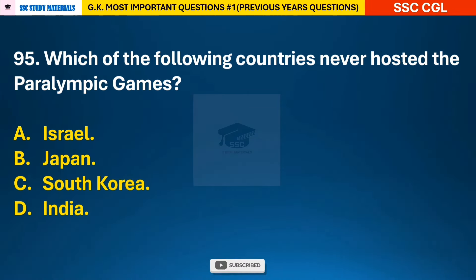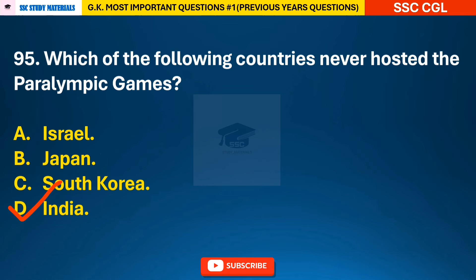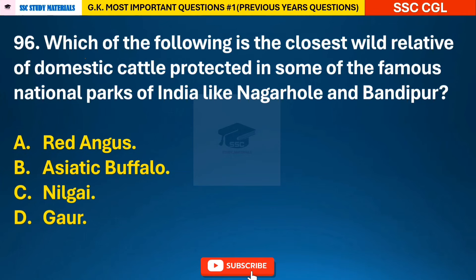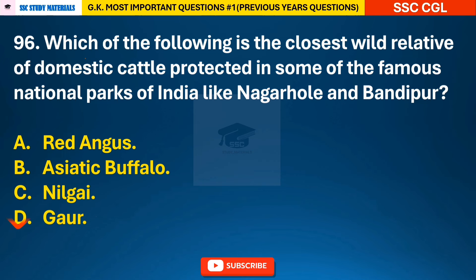Question 95: Which of the following countries has never hosted the Paralympic Games? — answer D: India has never hosted the Paralympic Games. Question 96: Which of the following is the closest wild relative of domestic cattle, protected in some famous national parks of India like Nagarhole and Bandipur? — answer D: Gaur.